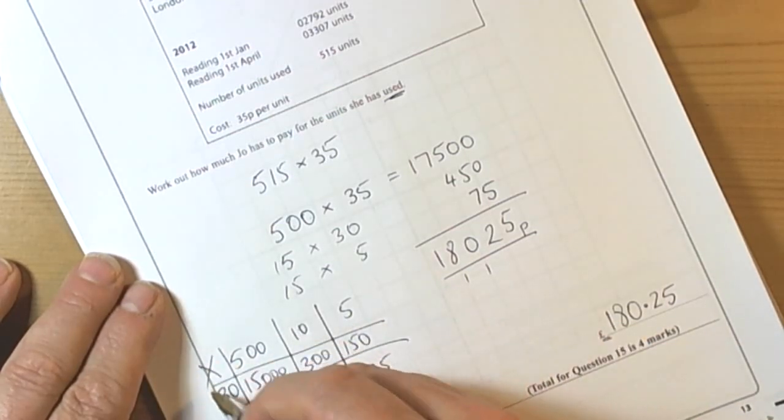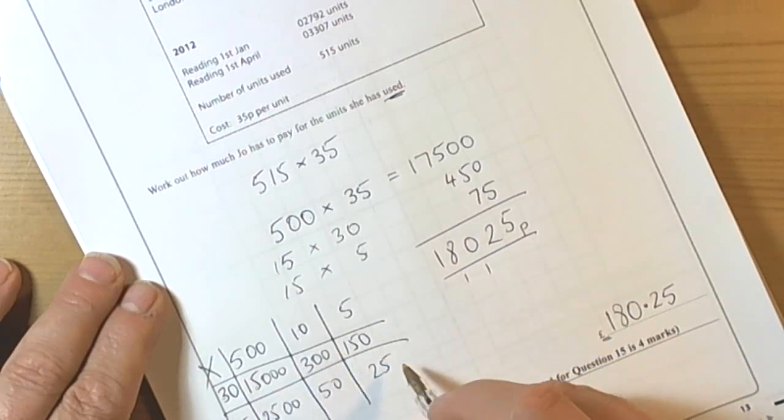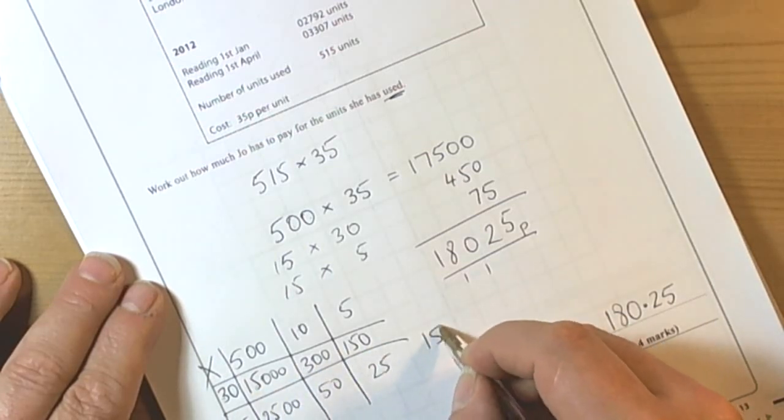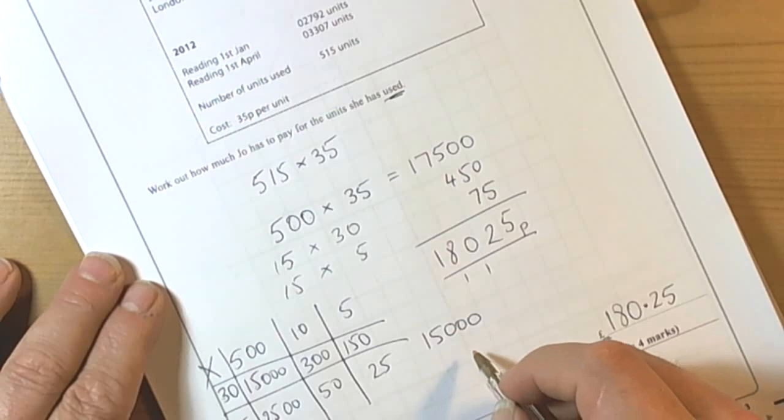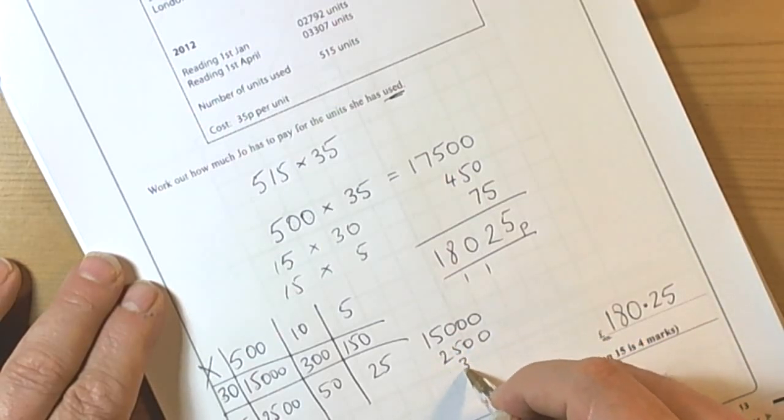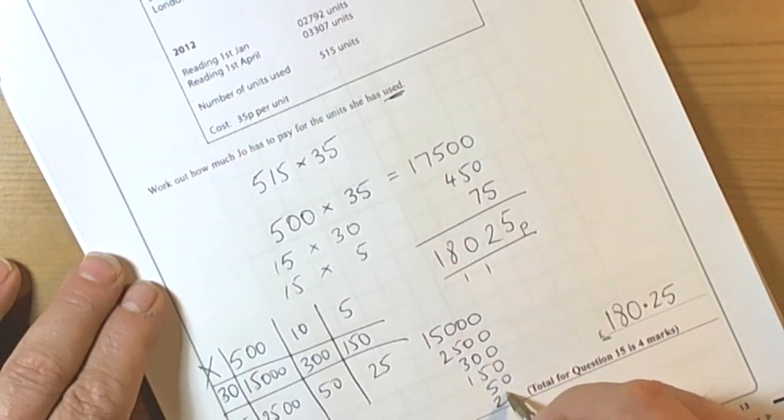And this method, commonly known as the grid method, you take all the bits you have got inside and then add them up, but again being really careful to line up your place values. So 15,000, 2,500, 300, 150, 50, and 25.